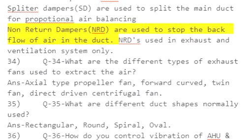Q51: What is the insulation thickness of inside and outside ducts? Answer: 25 millimeters inside and 50 millimeters outside for ducts passing through unconditioned spaces. Q52: Difference between nominal capacity and actual capacity — answer: check on internet.